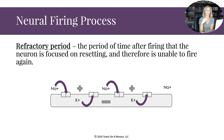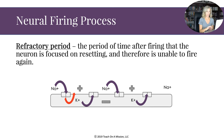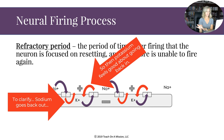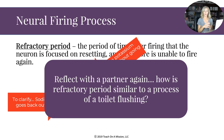After the neuron fires, it enters the refractory period — the time after firing when the neuron is focused on resetting and is unable to fire again. Sodium starts to leave, potassium feels good about going back in, as a domino effect down the axon. Sodium goes back out and potassium comes back in, restoring homeostasis.